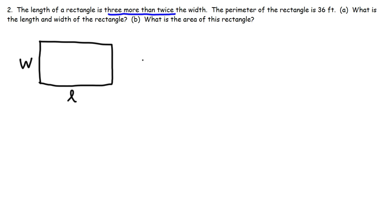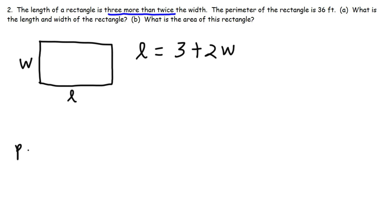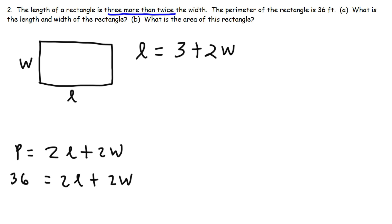Reading from left to right: the length L equals three plus twice the width, so L equals 3 plus 2W. We still have our perimeter equation: P equals 2L plus 2W, and the perimeter is 36 feet. Since everything is even, we divide each number by 2: 36 divided by 2 is 18, giving us 18 equals L plus W.